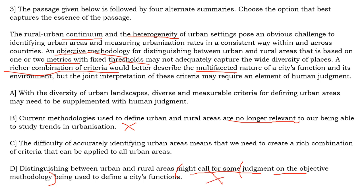So you have Options A and C as probable answers. Both talk about a richer combination of criteria. However, Option A also mentions the human judgment aspect, whereas Option C does not. The best answer is always the option that gives more information about the passage. Option A gives more information — including the vital point about human judgment being required — which is not in C. So Option A is the better answer, not C. Option A is the best summary for this question.